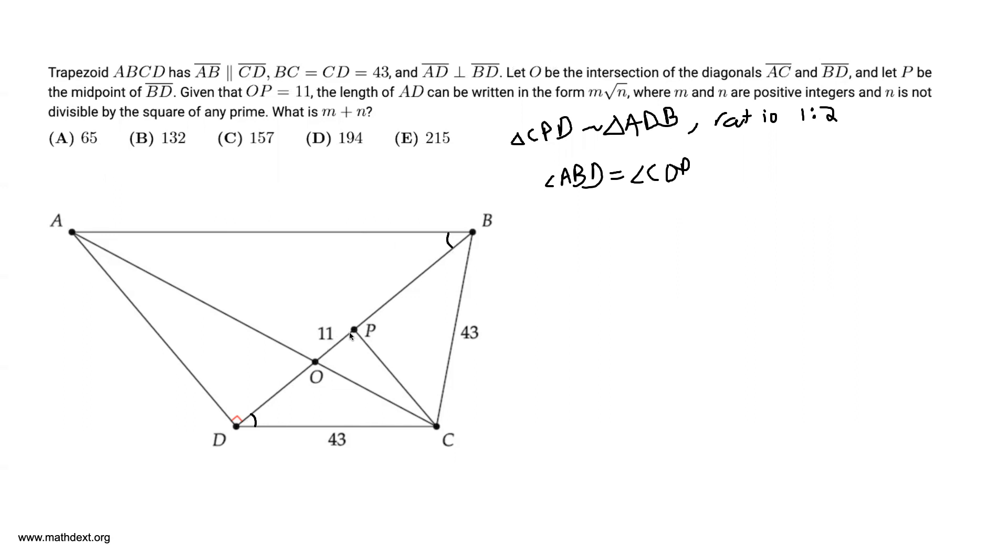We can also prove that this is a right angle. There's a theorem that states that whenever you have a median of an isosceles triangle from the vertex, it intersects the base at a right angle.